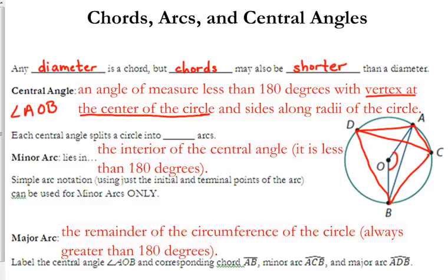Each central angle splits a circle into two arcs. It splits the circle into two different arcs, the arcs referring to the portions of the circumference. So, the minor arc is the interior of the central angle. The way that I remember minor arcs is they are always less than 180 degrees. Minor, less than. Those words kind of go together.